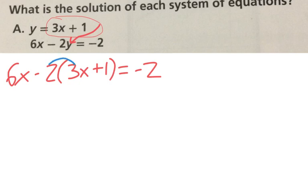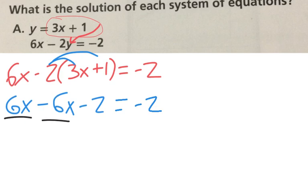I distribute. I'm going to get 6x minus 6x minus 2 equals negative 2. Do I have any like terms? 6x minus 6x is... It's not x. Zero. So those cancel. And I'm left with negative 2 equals negative 2? That's what's true.